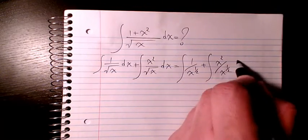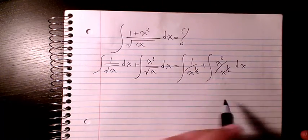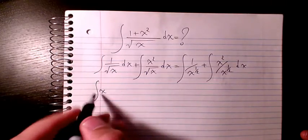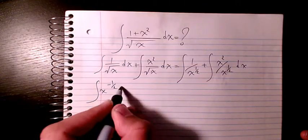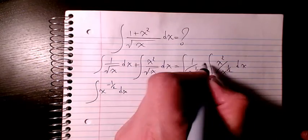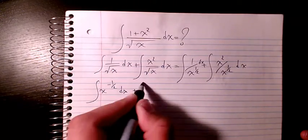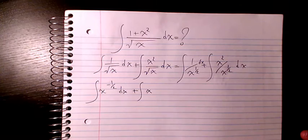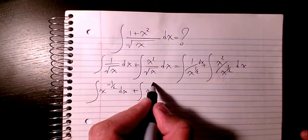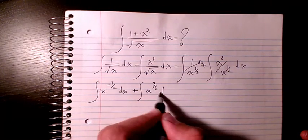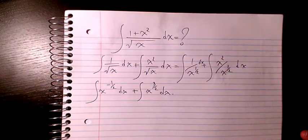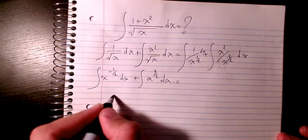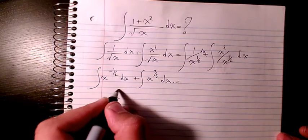This gives us the integral of x to the power of negative 1/2 dx plus the integral of x to the power of 2 minus 1/2, which is x to the power of 3/2 dx.